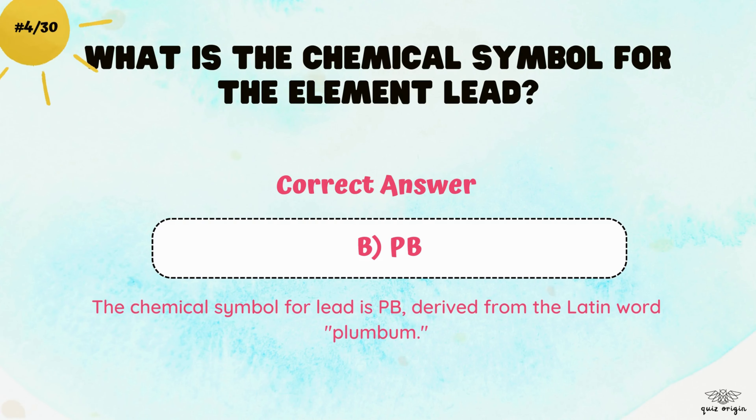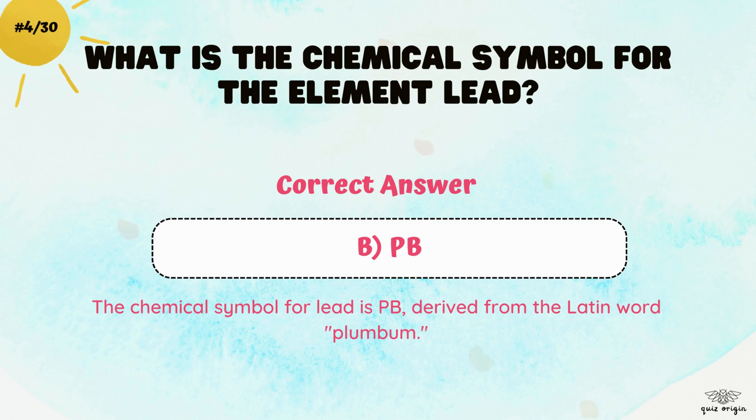The correct answer is B. Pb. The chemical symbol for lead is Pb, derived from the Latin word plumbum.